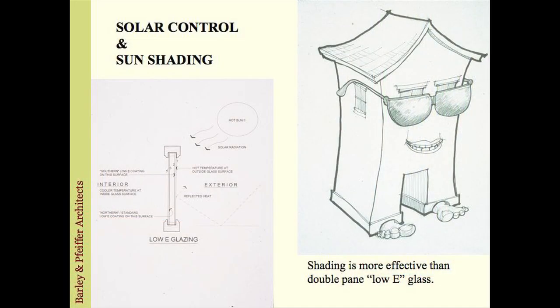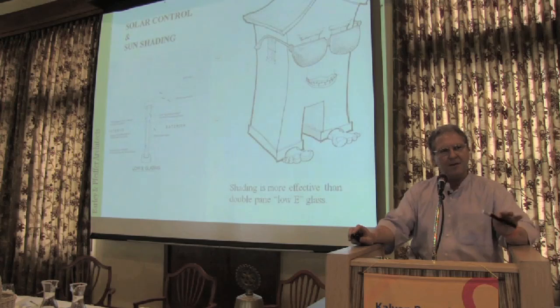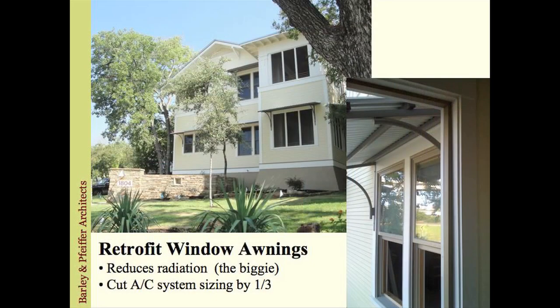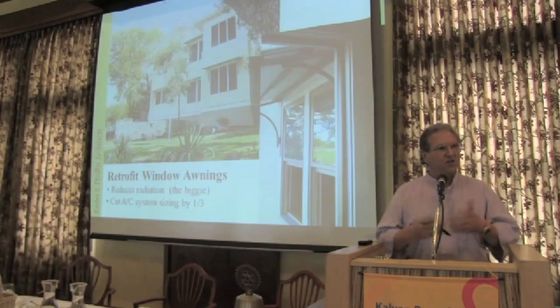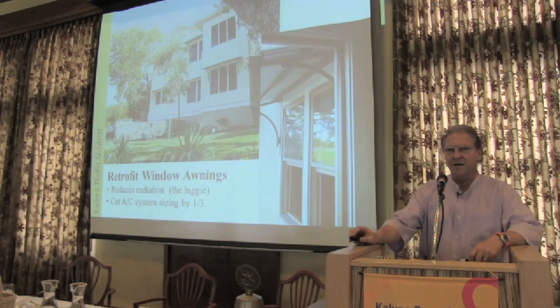Shading your windows is probably the most effective thing you can do, next to building a tight house, so that it doesn't get bombarded particularly by the afternoon sun. Low-e glass does help, but nothing like a good old-fashioned awning to shade the windows. This is an old home we renovated on 6th Street — these awnings alone cut the air conditioning load by a third, just by keeping the sun off the windows and preventing radiation from heating up the inside of the house.